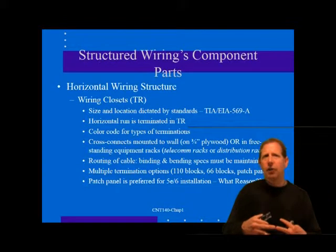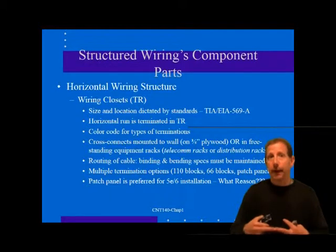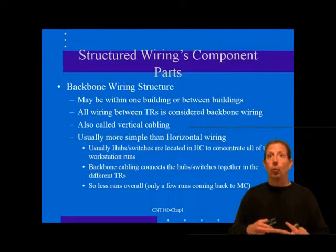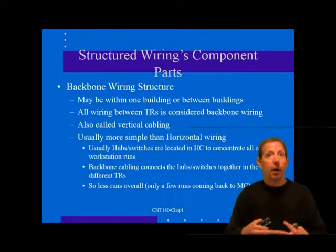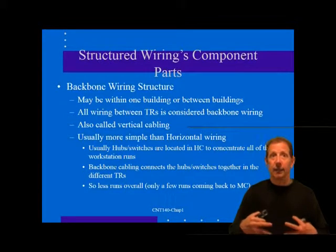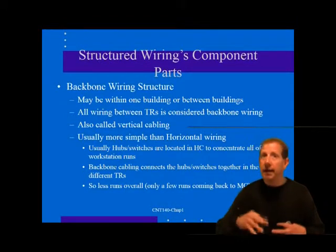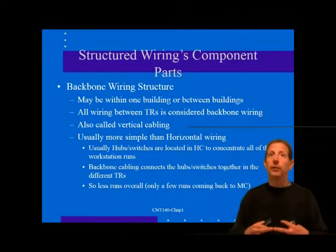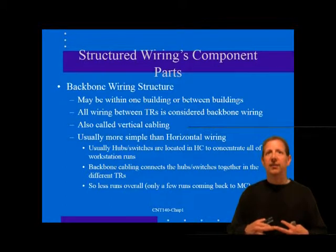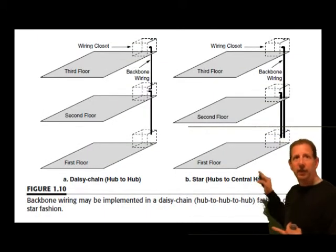Installation testing is simplified with patch panel termination because all station cables can be easily scanned to a certification standard. The only possible disadvantage is that multiple-use applications of the station cables are difficult, since each cable terminates into one patch panel location. Backbone wiring may be within one building or between buildings on a campus. All wiring between telecommunications rooms — MCs, ICs, and TRs — is referred to as backbone wiring. In many cases this backbone wiring will be between wiring closets on the same floor of a building.